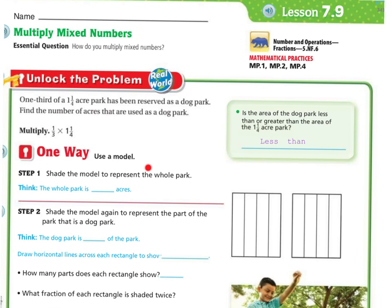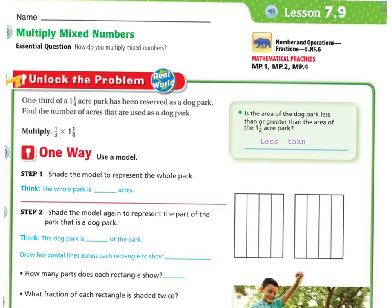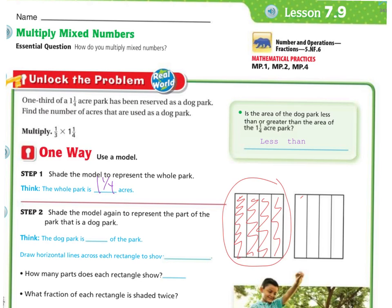One way we can use a model. We can shade the model to represent the whole park. The park is one and one-fourth acres. So we're going to shade one whole, and this is one whole and one-fourth — that's going to represent the whole park.